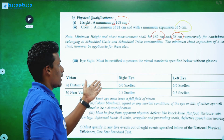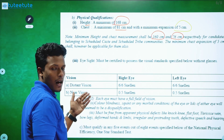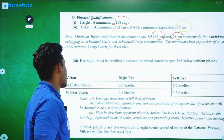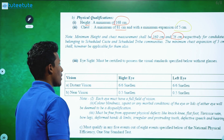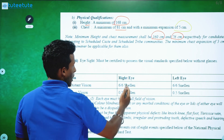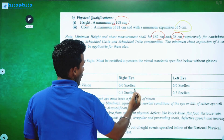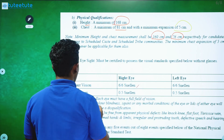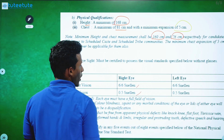The eye test requires the right and left eye vision to be 6x6, with near vision of 0.5.